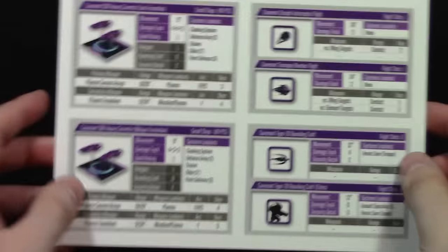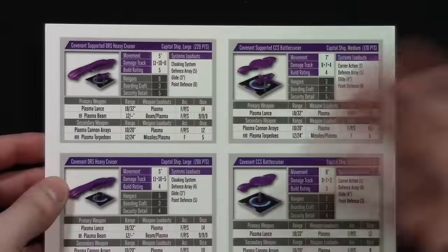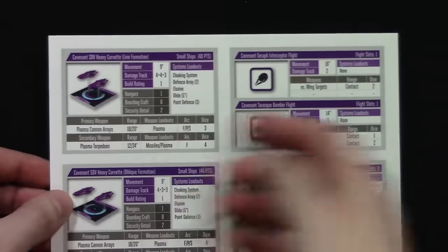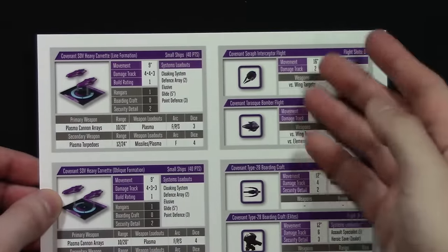You also get another stat card, which is the same as the one in the starter box. So it tells you the stats for the ORS, the CCS, and on the other side you've got the STV Heavy Corvettes and the tokens as well. So you get one of those cards.